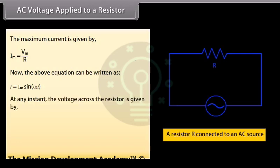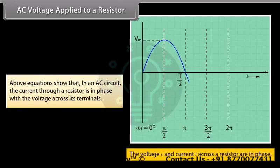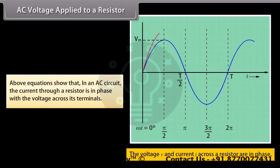At any instant, the voltage across the resistor is given by Vr = IR. Substituting the value of I, we get Vr = Vm sin(ωt). This equation shows that in an AC circuit, the current through a resistor is in phase with the voltage across its terminals.